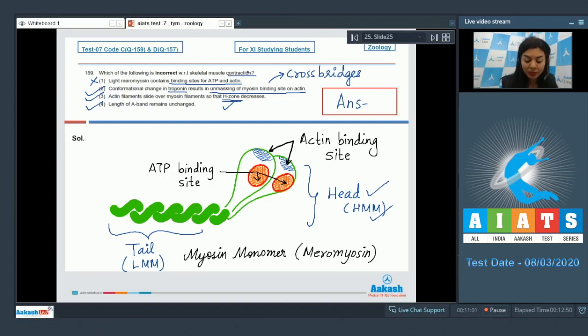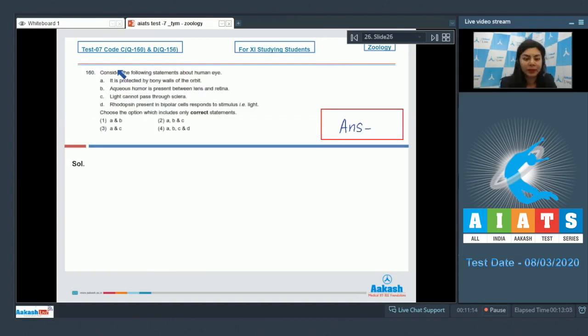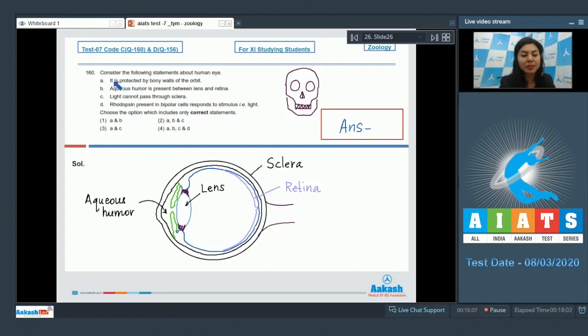The incorrect statement here is option number 1, and that is our answer. Question 160: Consider the following statements about human eye. There are statements A, B, C, and D and we have to choose the option which includes only correct statements. Let's read the given statements. It is protected by bony walls of the orbit. Yes, this is a true statement. The bony sockets that are present protect the eyes and these are called as orbits.